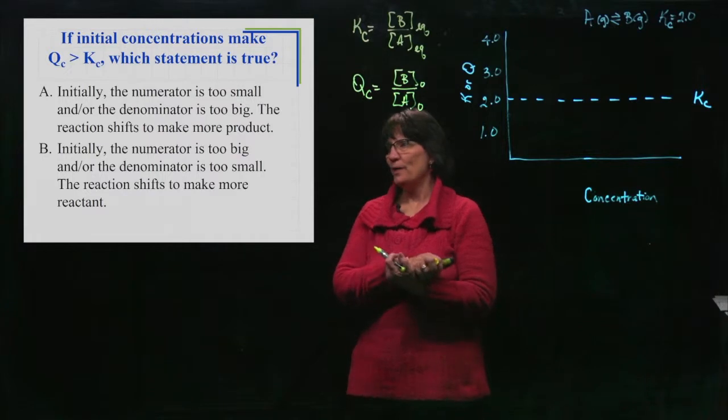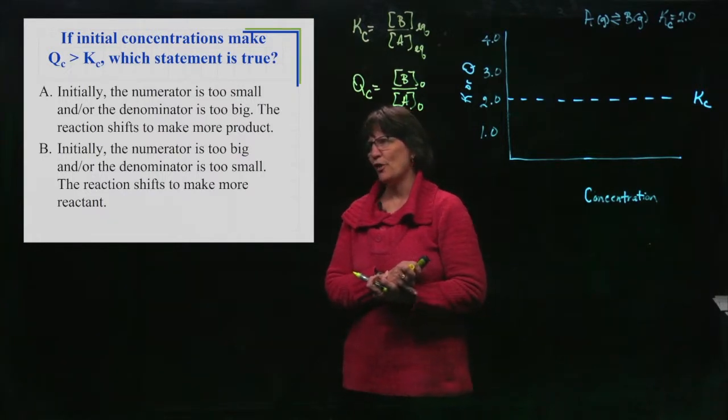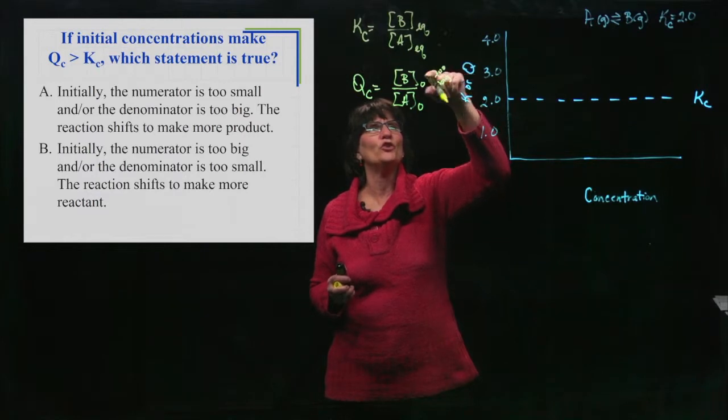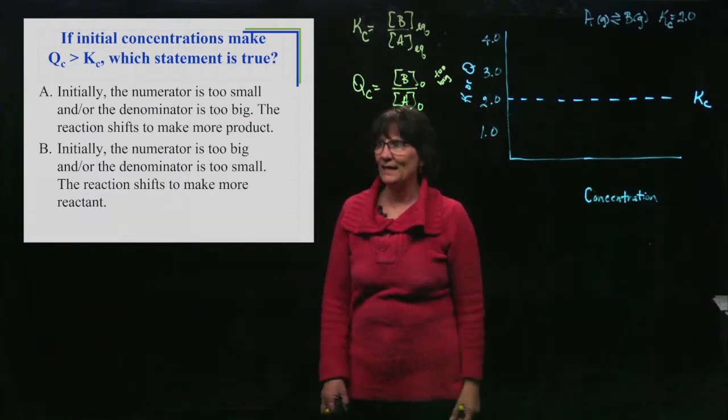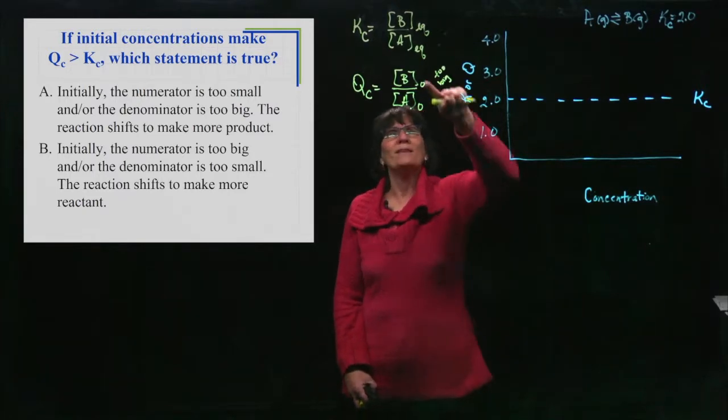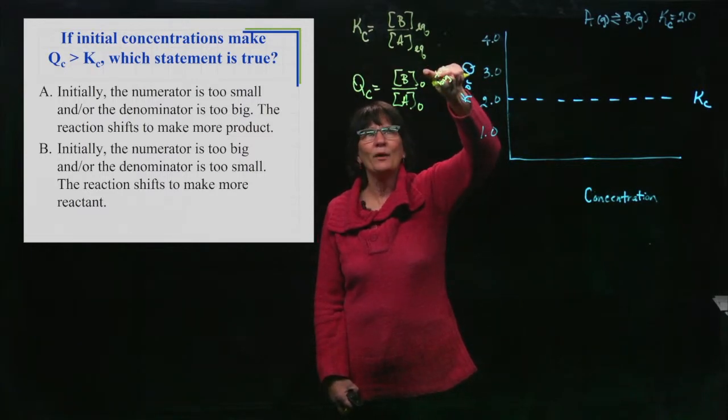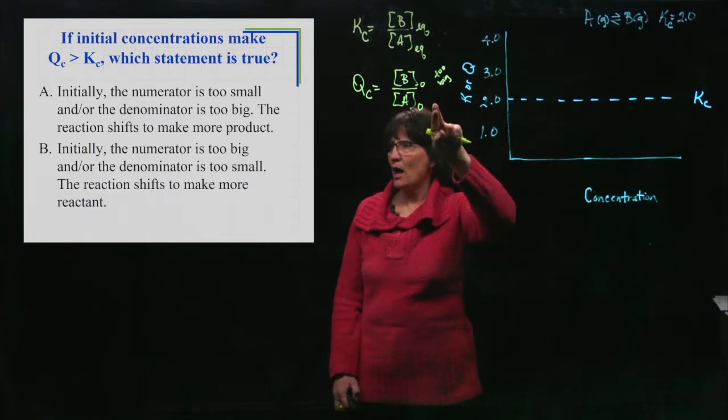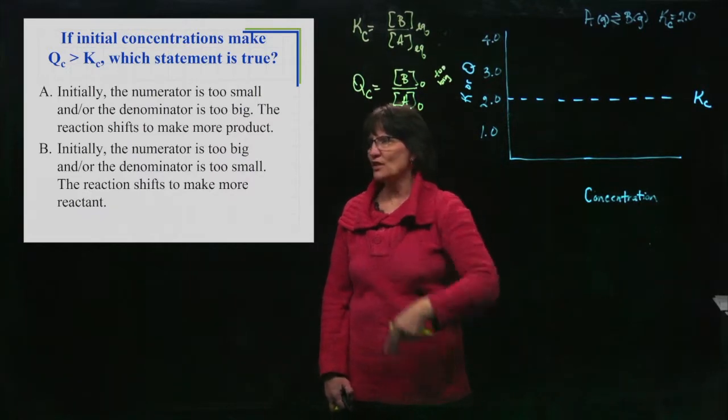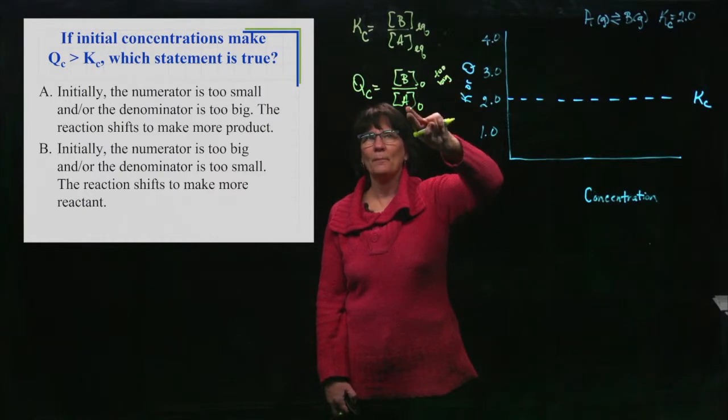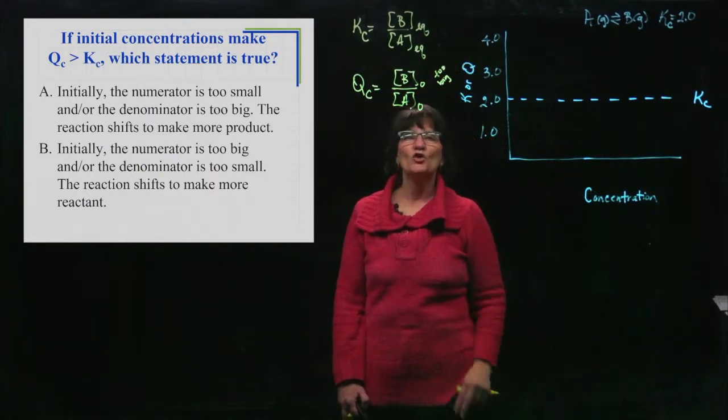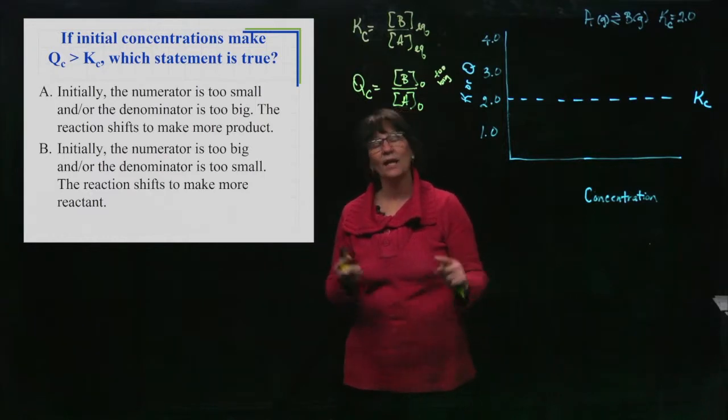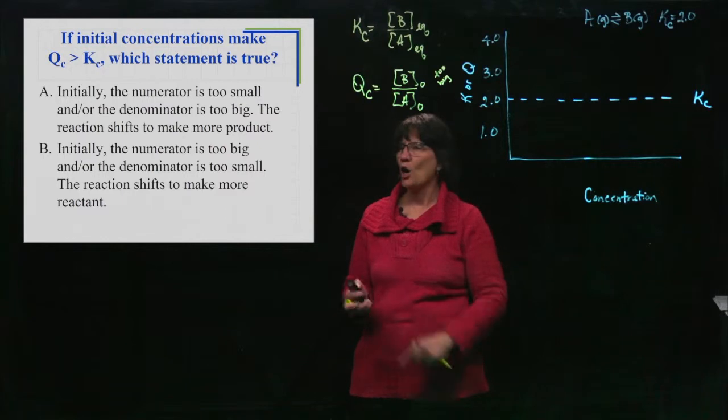All right, so hopefully you picked the numerator is too big, the denominator is too small. If this is bigger than where it wants to be, the numerator is too big. It needs to get smaller. What sits up here? That's products. It's too big, we got to get rid of some of that. So we're going to shift and make some reactants. If it shifts the reaction this way, making more reactants, it's going to bring down the top number, bring up the bottom number, and get it back in line where it needs to be. So we can compare the value of Q to the value of K and we're going to know which way the reaction needs to proceed in order to get to equilibrium. In this case, it's got to proceed and make more reactants.